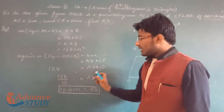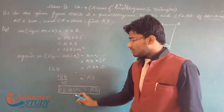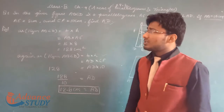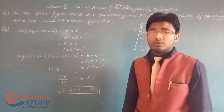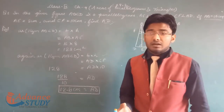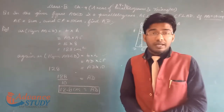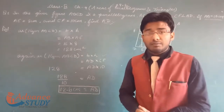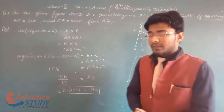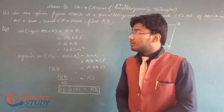So 128 divided by 10 gives AD = 12.8 cm. This is a very easy question. Now we move on to question number 2, which is a basic but very important question for the full exercise.